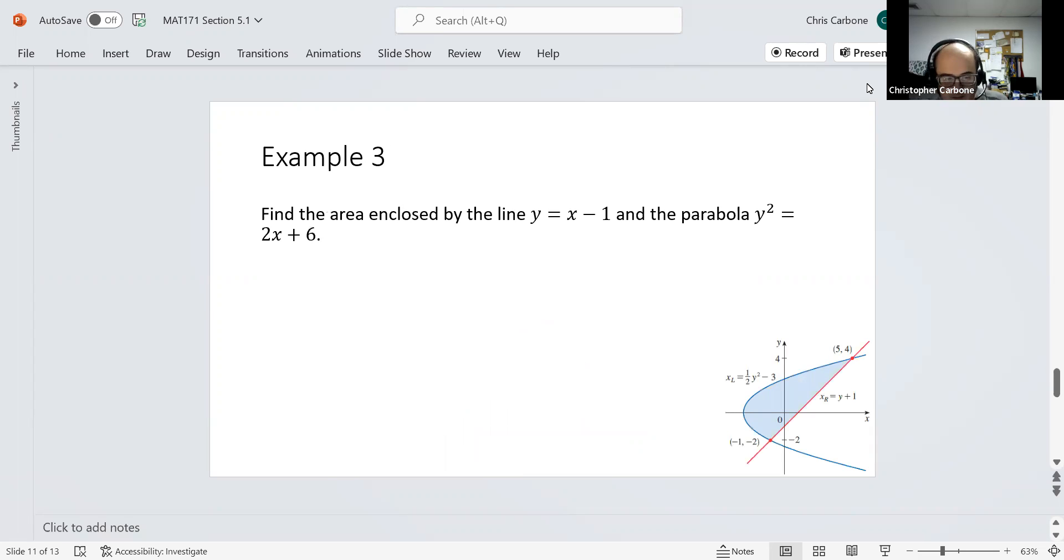For example, find the area enclosed by the line y equals x minus 1 and the parabola y squared equals 2x plus 6. I have that graph down here on the bottom. When we solve these two simultaneously, we get our intersection points to be at the points of negative 1 comma negative 2 and 5 comma 4.